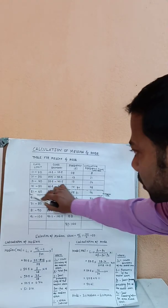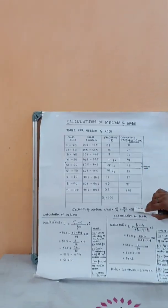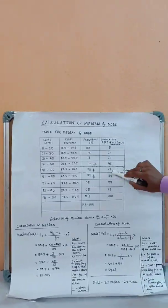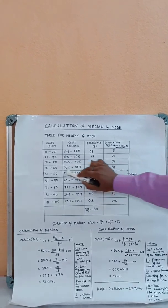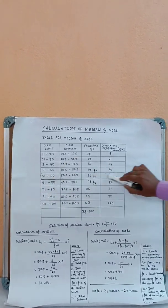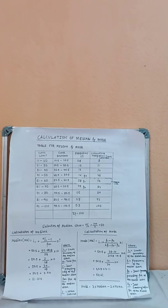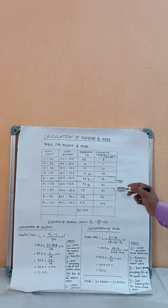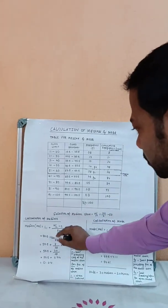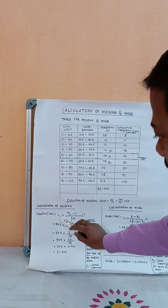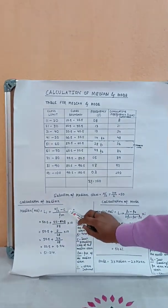Now we have the median class confirmed: 48 and 76 are the cumulative frequencies bounding the median class. We will now calculate using the median formula: L1 plus (n/2 minus C) divided by fm, multiplied by I.